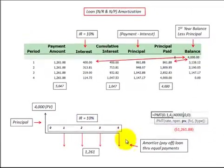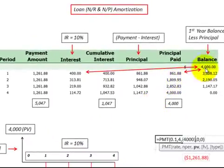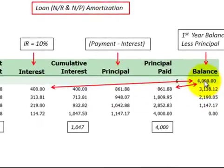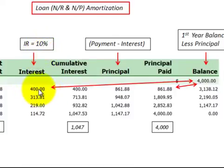Now we have to amortize or pay off these equal payments. Looking at our amortization schedule on the loan, we start at the beginning of year one with a $4,000 balance. We need to determine the interest expense or revenue on that loan for the year. We take the balance times the interest rate of 10%, and we get $400 interest expense or revenue for the year.